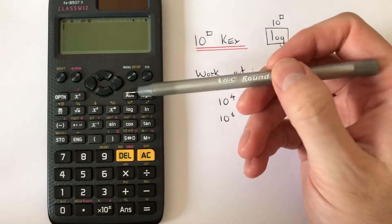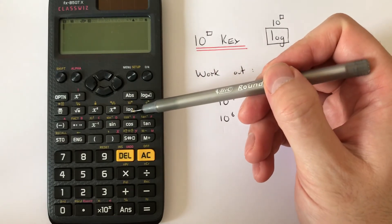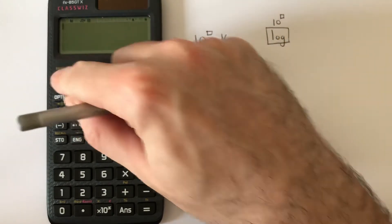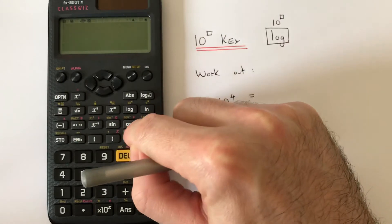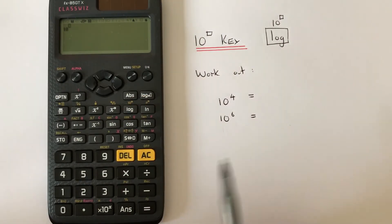To locate this key, we need to look on the second row of the scientific functions and press shift and then log.